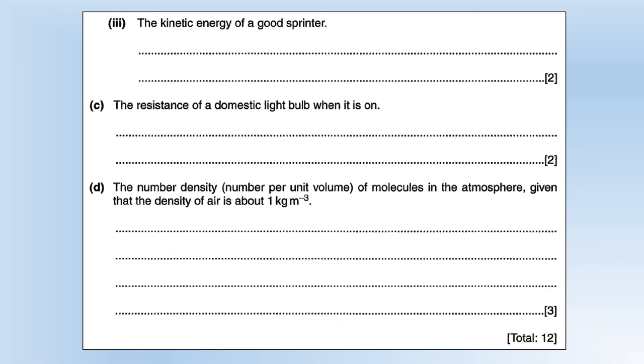The kinetic energy of a good sprinter. I reason well their velocity or speed is about 10 meters per second, the mass is probably about 100 kilograms, they're very muscular people generally, so that's going to give us 5,000 joules of kinetic energy.